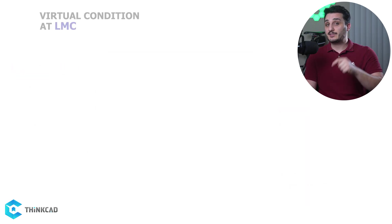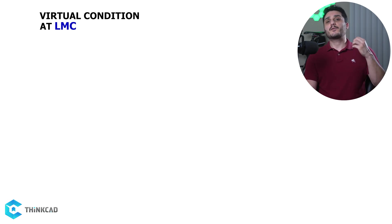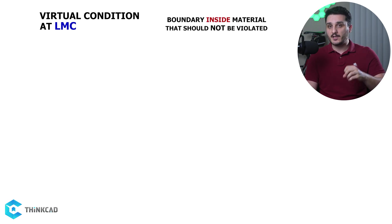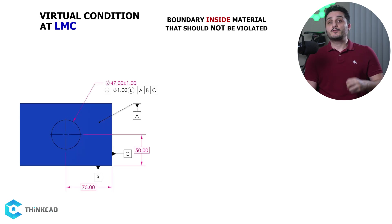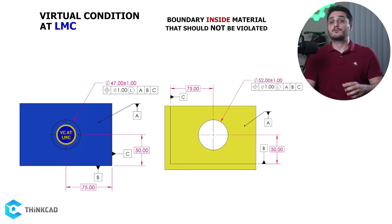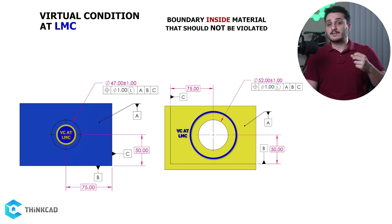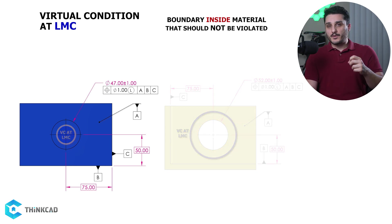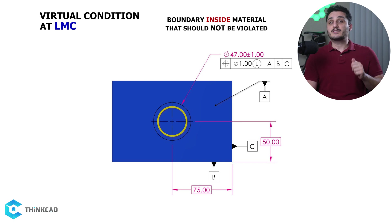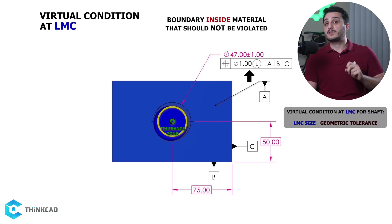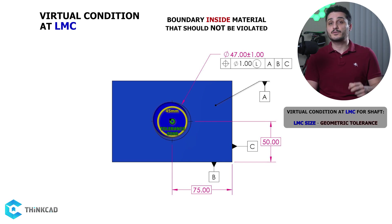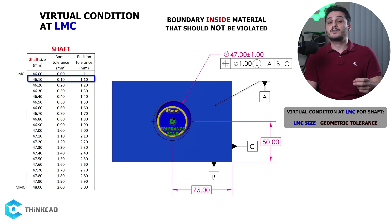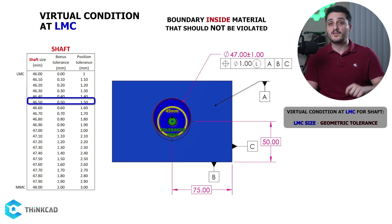Now let's see what virtual condition at LMC is. This is the opposite of virtual condition at MMC — our virtual condition creates a boundary that is always inside our material and not outside. So for a boss feature, it would be smaller than our minimum size, and for a hole feature, it would be larger than our largest hole. For the boss feature, virtual condition is 45mm because subtracting the geometric tolerance of 1mm from LMC of 46mm gives us 45mm. No matter what size your boss feature is, subtracting your position tolerance from your size will always give you the same 45mm boundary inside your feature.